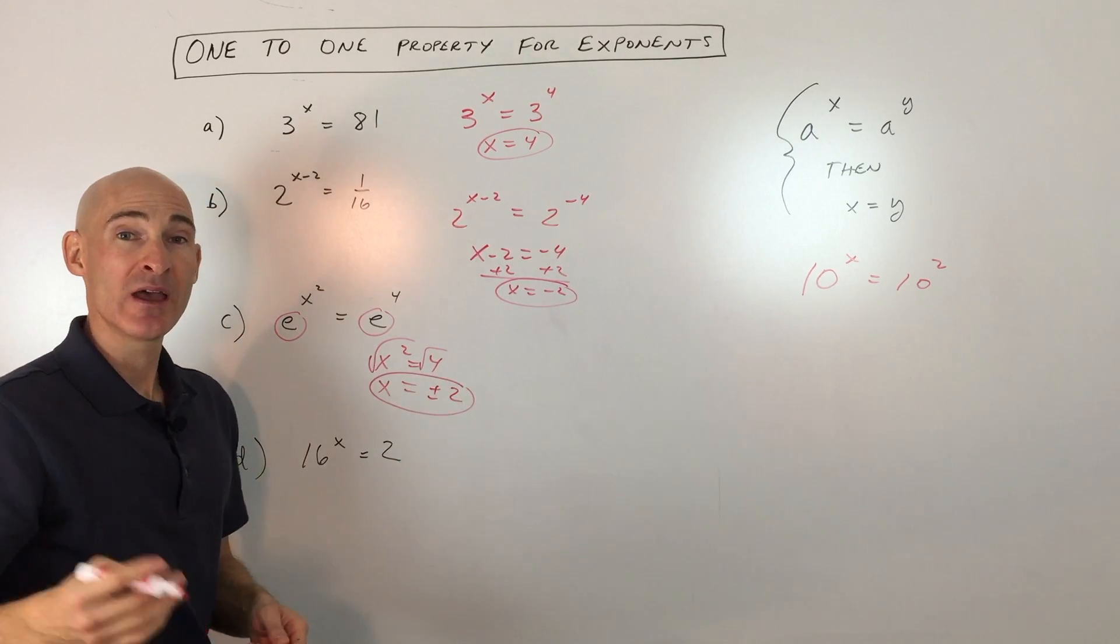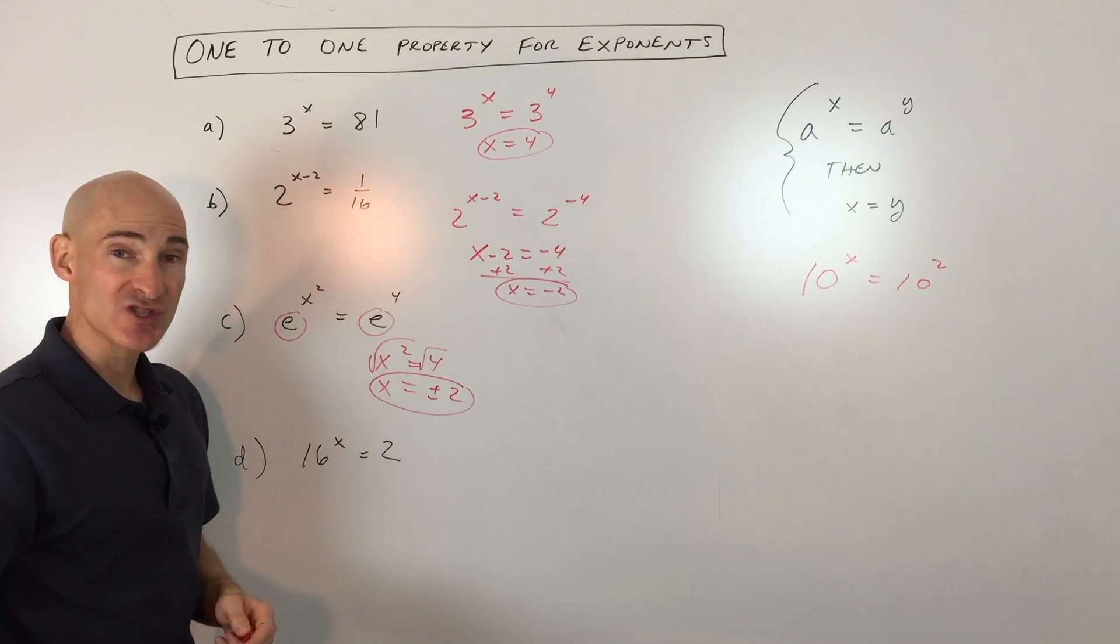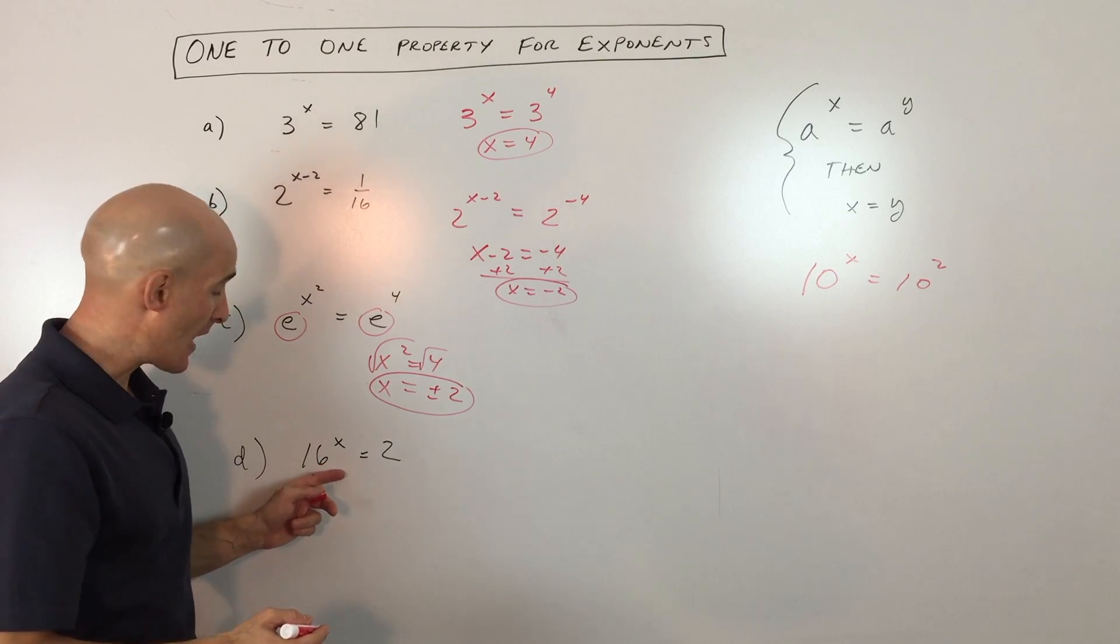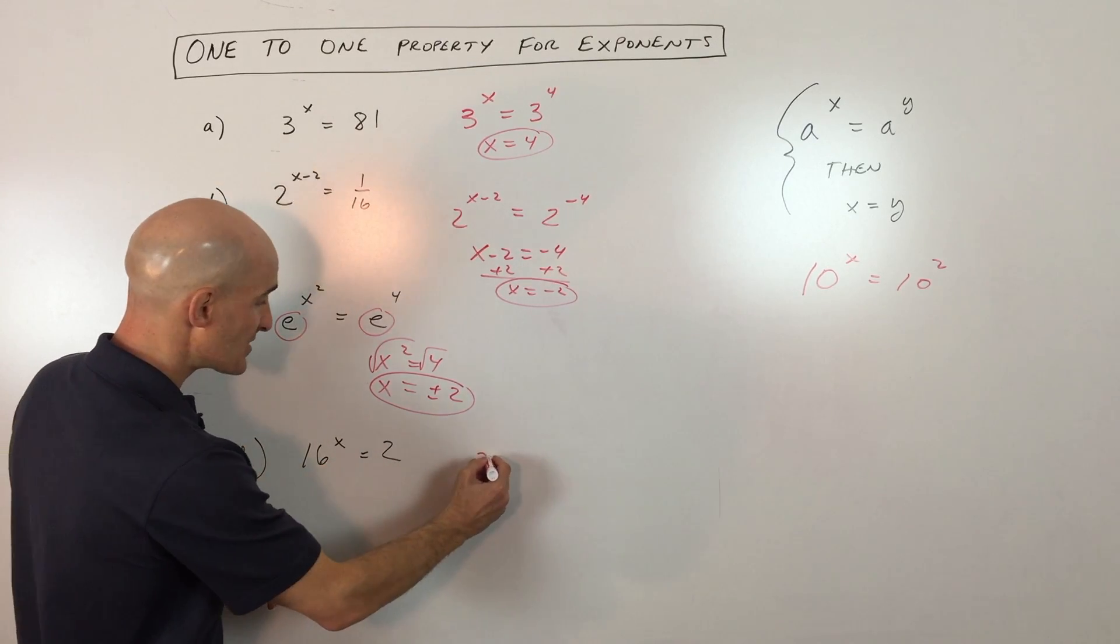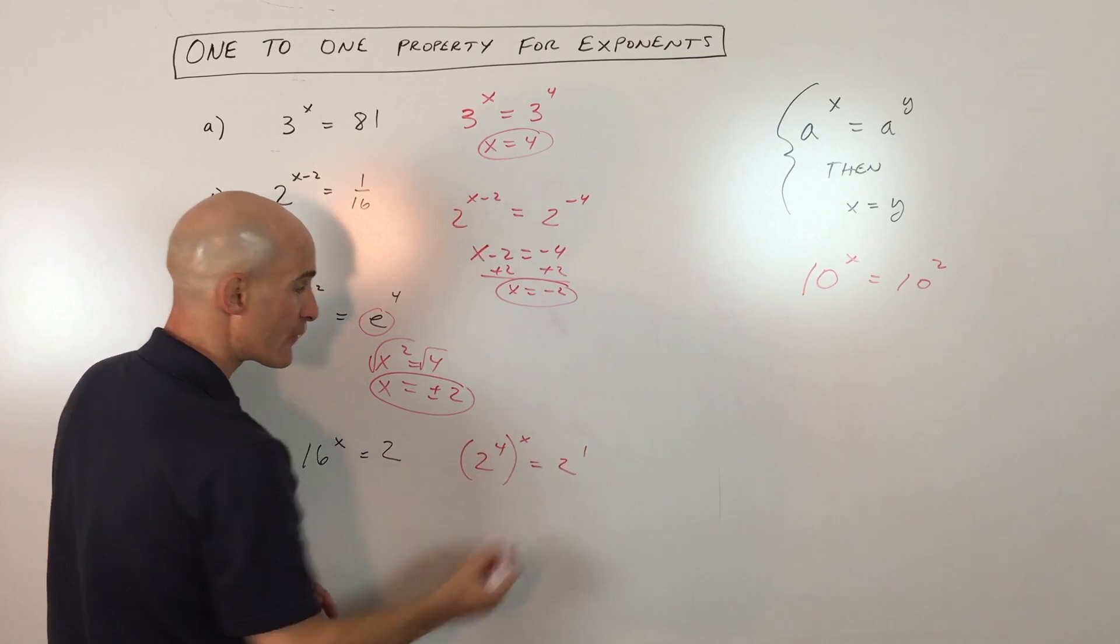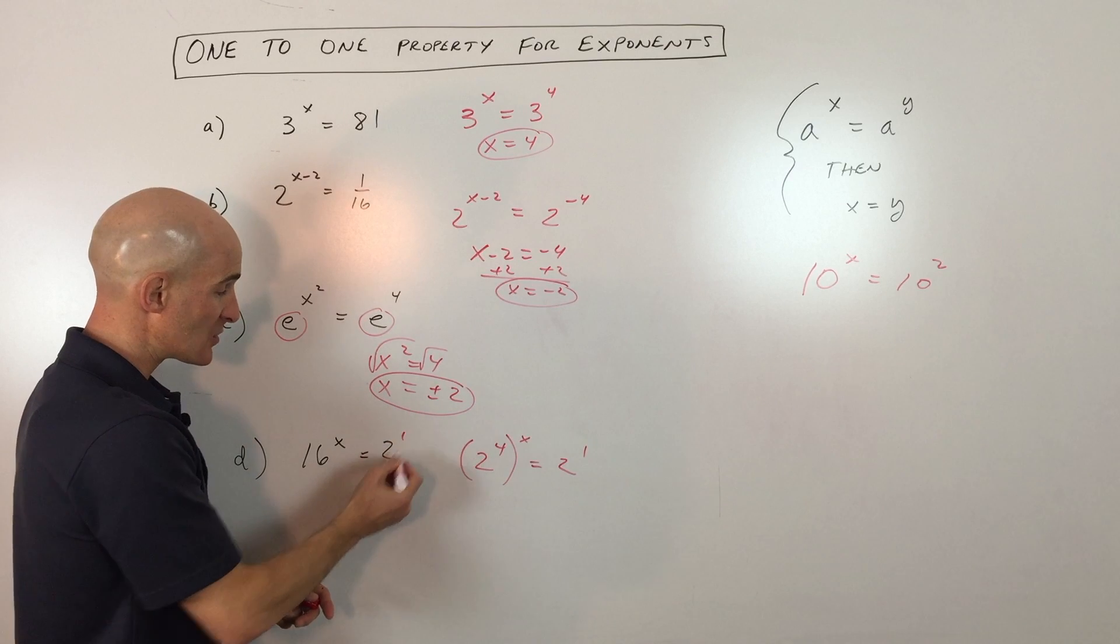And then the last example, 16 to the x equals 2. What you might recognize here is that they both have a 2 in common, base 2. 16 to the x is actually 2 to the 4th, all raised to the x, equals 2 to the 1st. If you don't see the exponent, that means this is a 1.